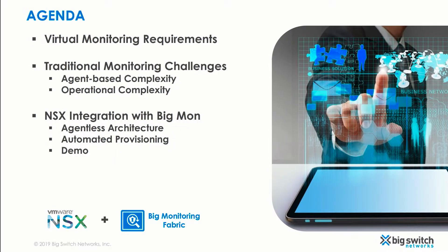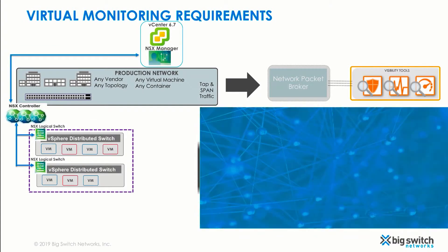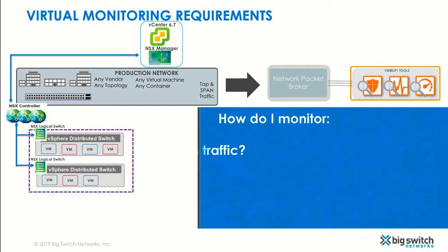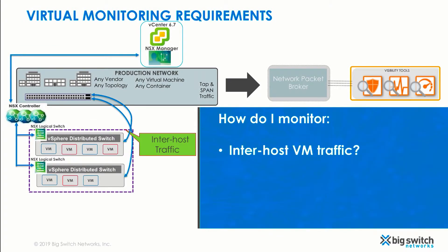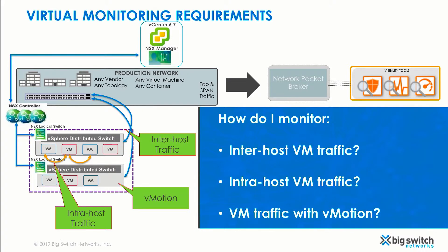Let's briefly talk about the requirements for virtual monitoring. How do I monitor inter-host traffic between two VMs on an NSX overlay network, or intra-host VM traffic residing on an NSX logical switch where packet flows never leave the host? Also, how do we handle monitoring a VM if the VM migrates from one host to another host via vMotion?